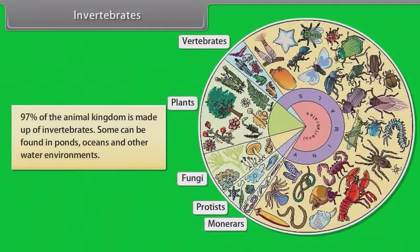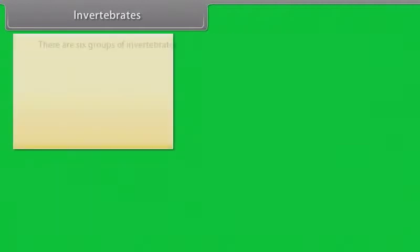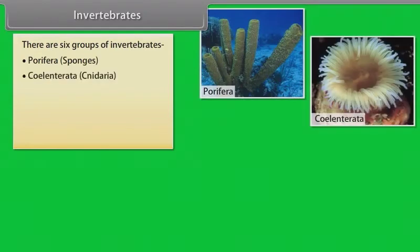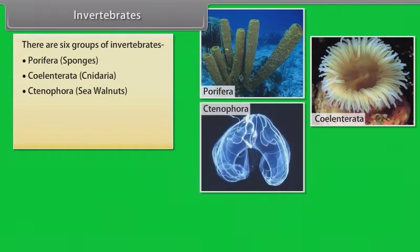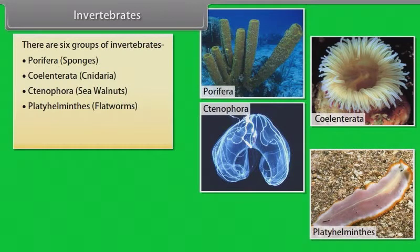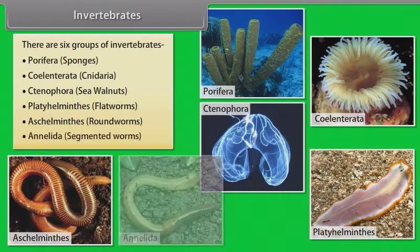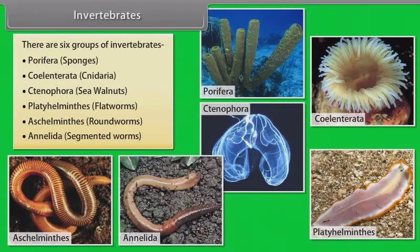Some invertebrates can be found in ponds, oceans and other water environments. There are six groups of invertebrates: Porifera (example: sponges), Coelenterata (example: Cnideria), Ctenophora (example: sea walnuts), Platyhelminthes (example: flatworms), Aschelminthes (example: roundworms), and Annelida (example: segmented worms).